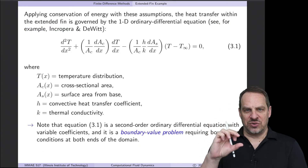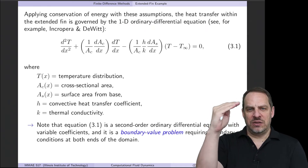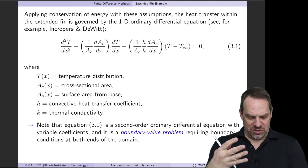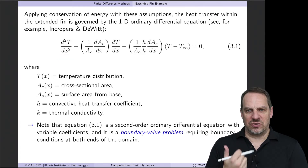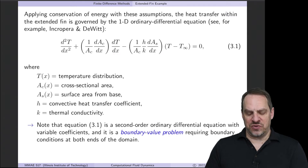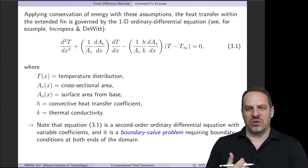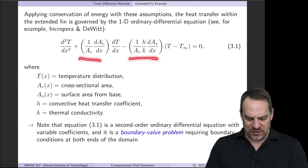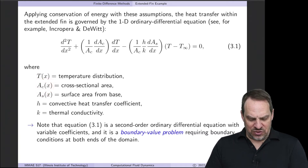Taking conservation of energy plus those two assumptions gives us a 1D ordinary differential equation — that's step one, going from reality to the governing differential equation. The equation is d²T/dx², a second-order linear ODE with variable coefficients. T is the temperature distribution along the fin, A sub c is the cross-sectional area (a function of x if the shape changes), A sub s is the accumulated surface area from the base, h is the convective heat transfer coefficient, and k is the thermal conductivity of the fin material.